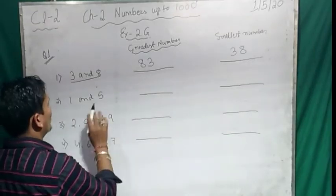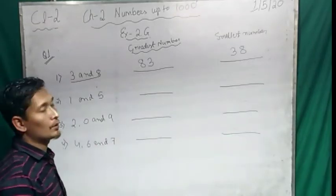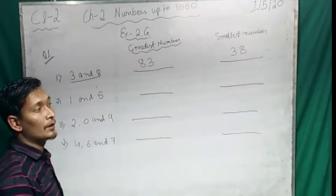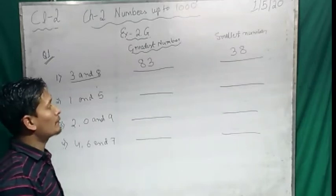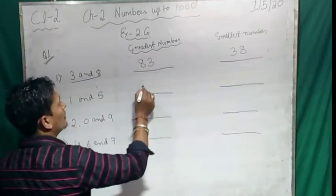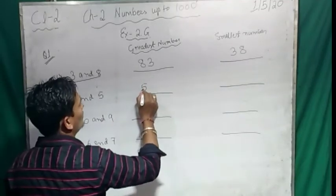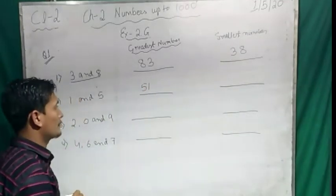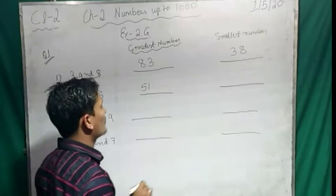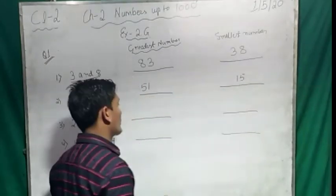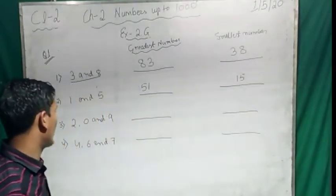Question 2: digits 1 and 5. For the greatest number, we start from the bigger digit — 5 then 1 — giving 51. And the smallest is 1 then 5 — giving 15.